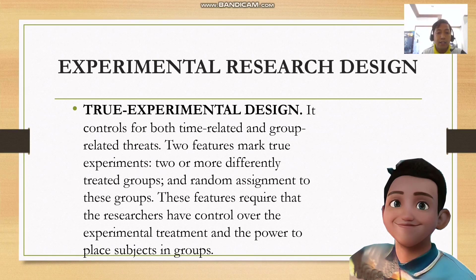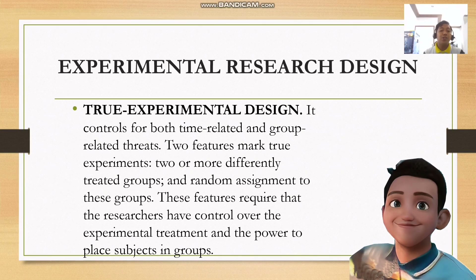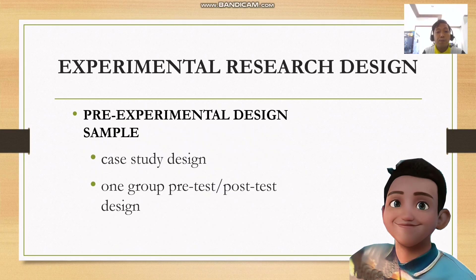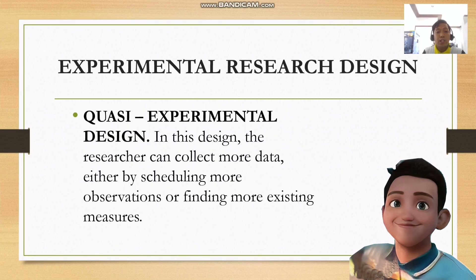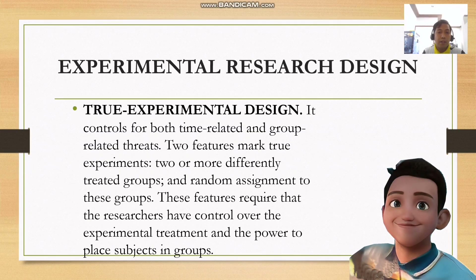For the true experimental design, it controls for both time-related and group-related threats. Two features mark true experiments: two or more differently treated groups, and random assignment to those groups. These features require researchers to have control over the experimental treatment and the power to place subjects in a group. Specifically, STEM students use experimental research design — either pre-experimental, quasi-experimental, or true experimental design.